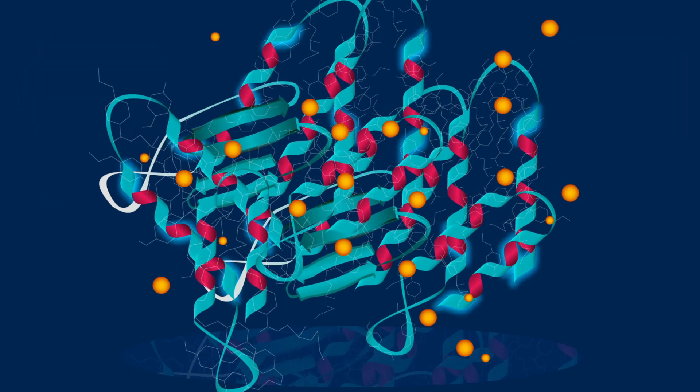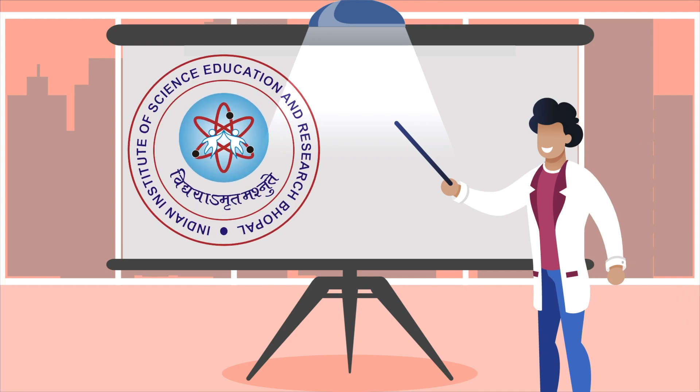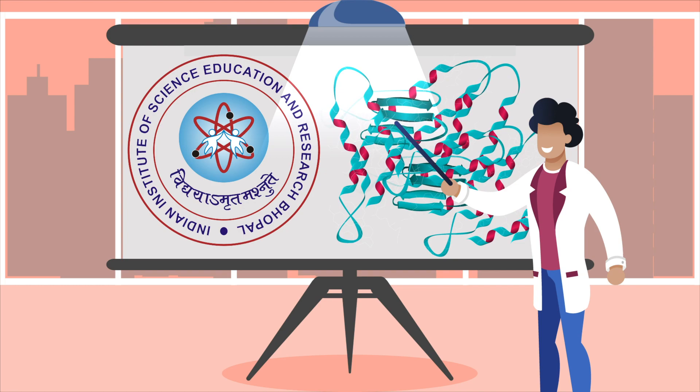However, proteins comprise multiple reaction centers, making it difficult to precisely label them in a modular and customizable manner. Scientists at ICER Bhopal have now developed a novel method that can be used to label a specific site on a protein.